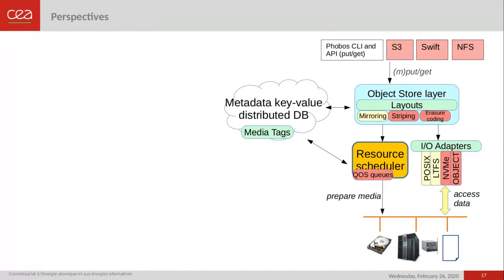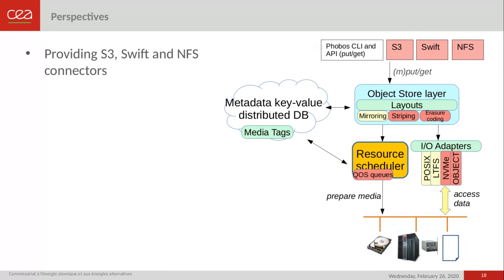Moving to development perspectives, we plan to develop new connectors like S3, Swift, and NFS, in addition to the existing C client API and the command-line client written in Python. As I mentioned, we currently collaborate with ISHEC and DDN to develop an S3 server on top of Phobos.